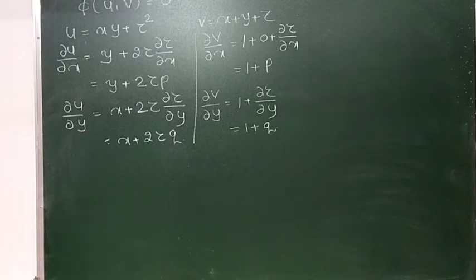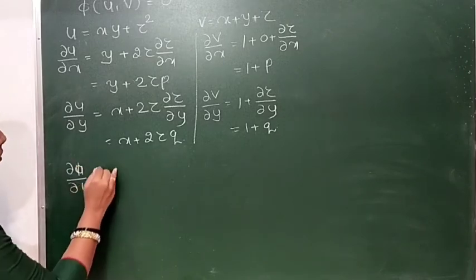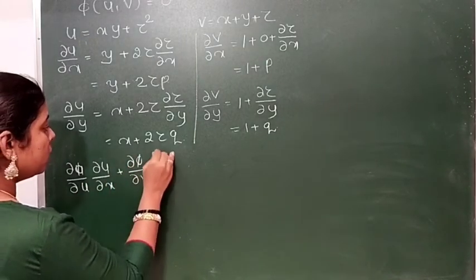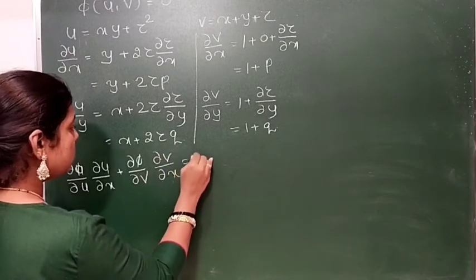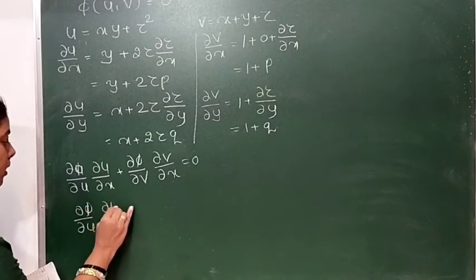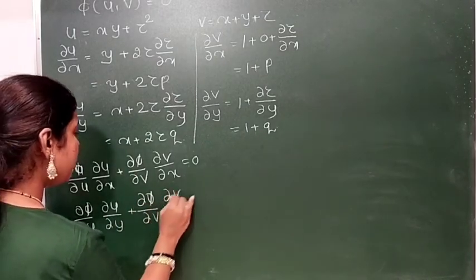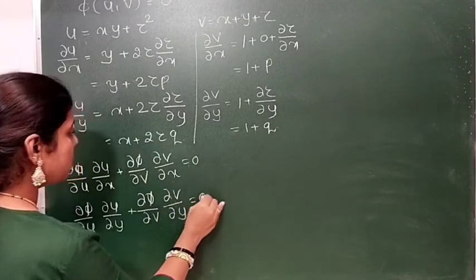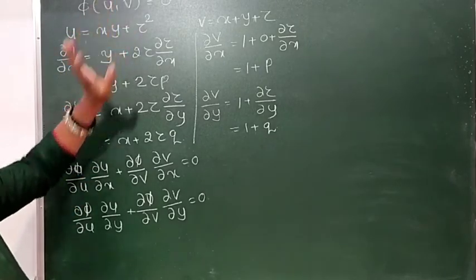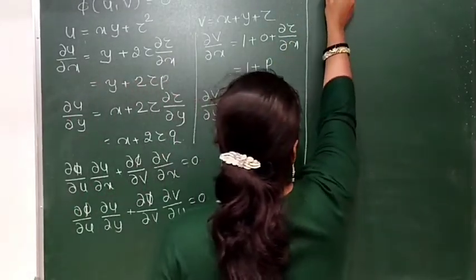The chain rule we have to write in the form: ∂π/∂u times ∂u/∂x plus ∂π/∂v times ∂v/∂x equals 0. Second: ∂π/∂u times ∂u/∂y plus ∂π/∂v times ∂v/∂y equals 0. These are the two chain rules applicable for the two functions π of u and φ. After getting this, we have to divide these two chain rules.